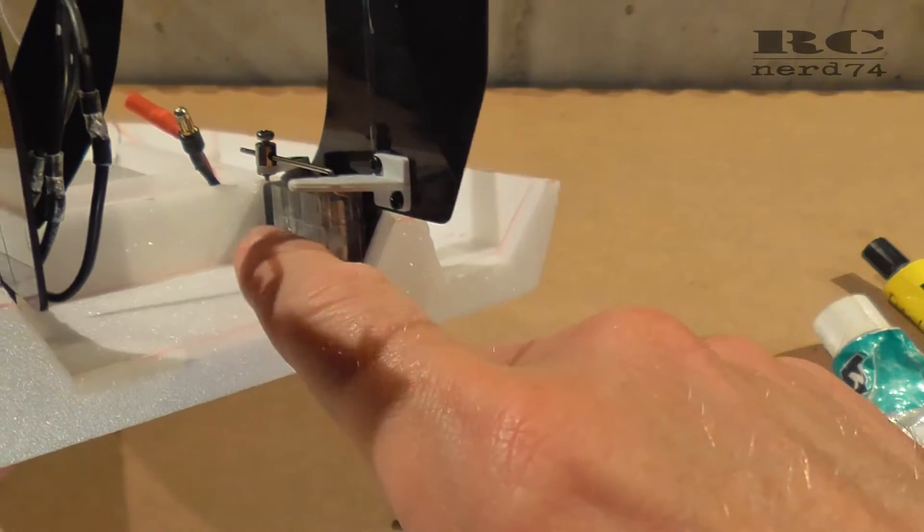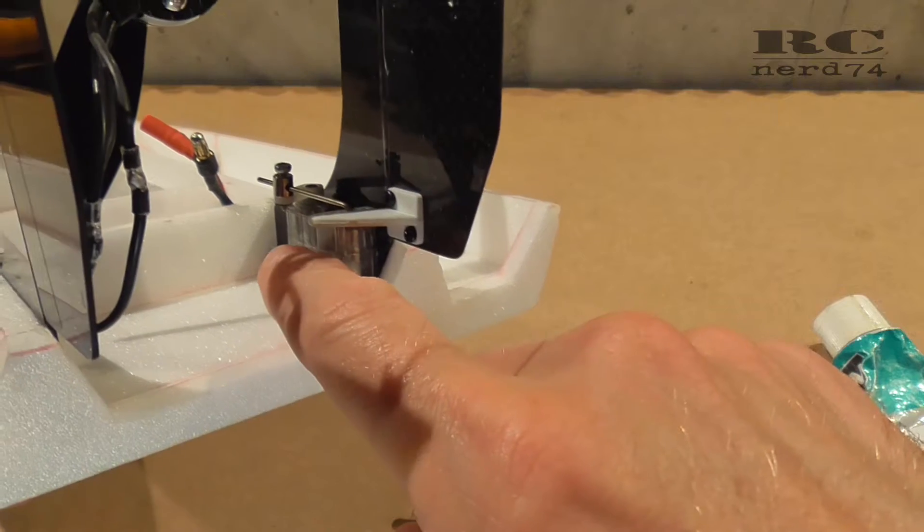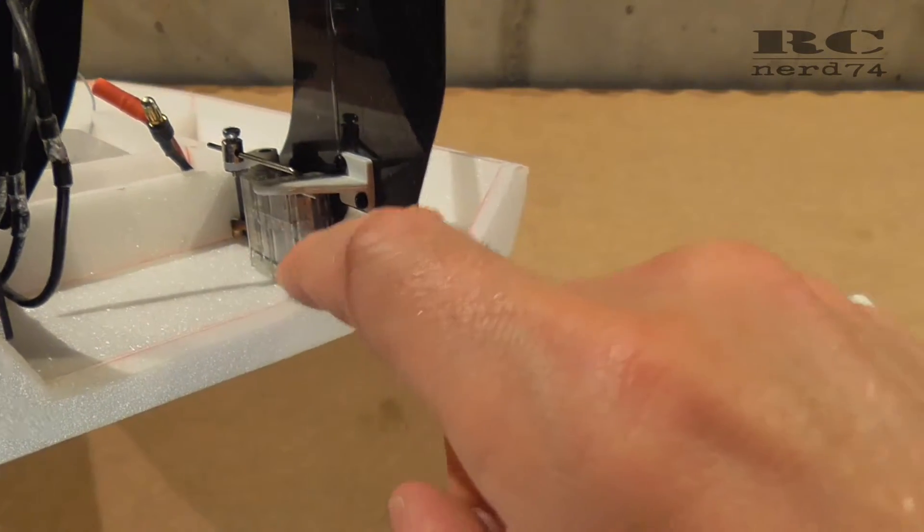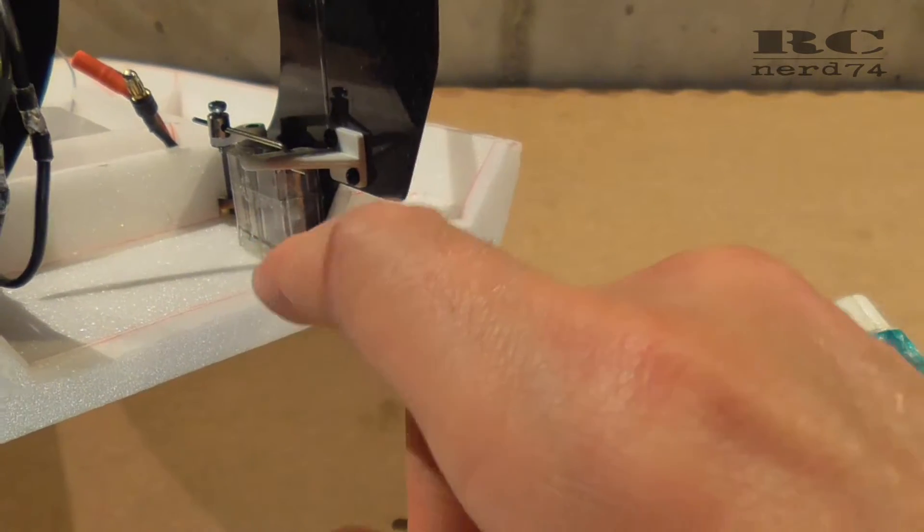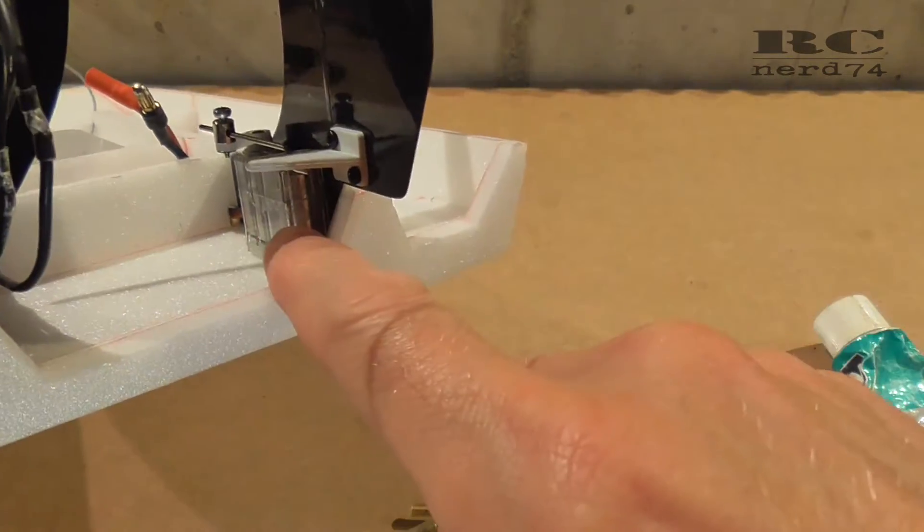The second mod is that I use some UHU pore to close all the seams around the servo and at the same time I also glued the servo with some UHU pore onto the motor mount.